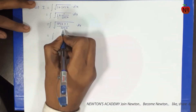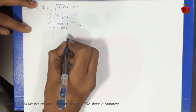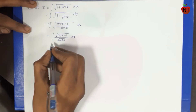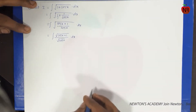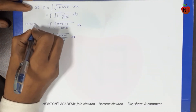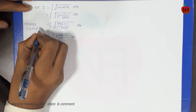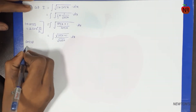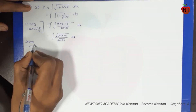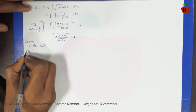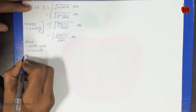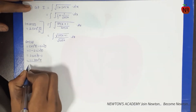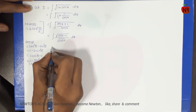Next. Numerator me bhi root hai, denominator ko alag root deta hoon, into dx. Is ke liye formula aapko pata hona chahiye. Jaisi ki: 1 + cos(anything) = 2cos²(anything/2). Ek formula ho gaya. Second: cos double angle formula hai — cos²θ − sin²θ, phir 1 − 2sin²θ or 2cos²θ − 1, aur 1 − tan²θ upon 1 + tan²θ.